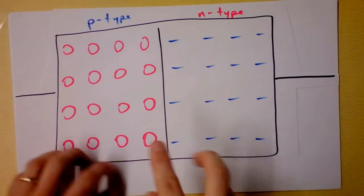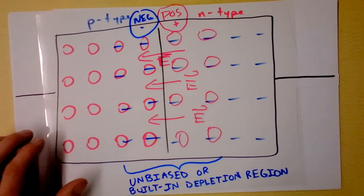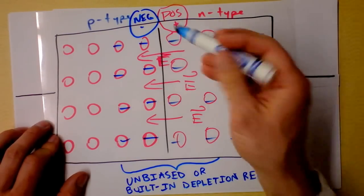As a consequence, we'll get a depletion region, which I can show right here, where there's no free charge. In fact, there is excess charge, but it's not free to move.